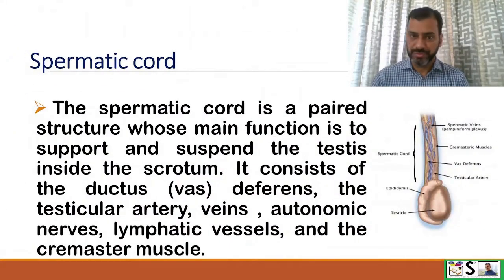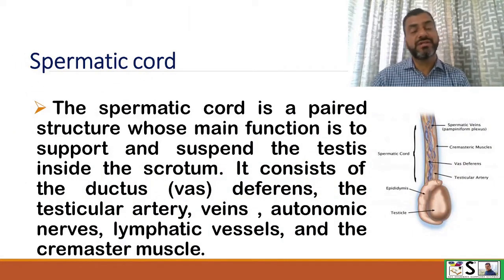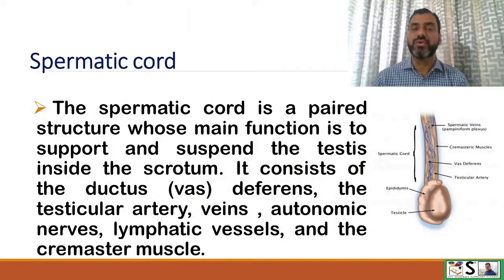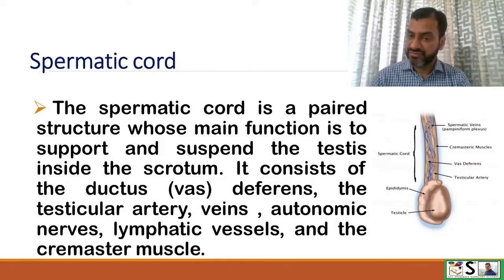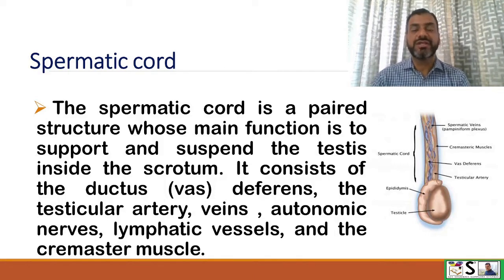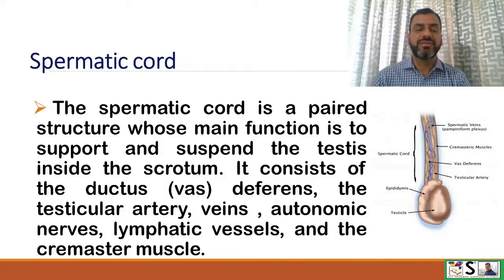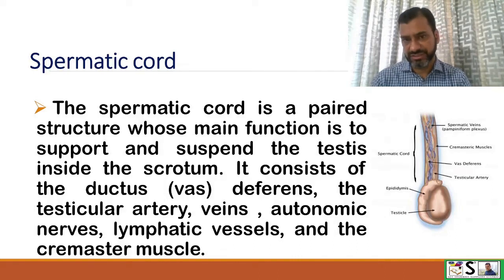The spermatic cord is a paired structure whose main function is to support and suspend the testes in the scrotum. It consists of the ductus deferens, testicular arteries, veins, autonomic nerves, lymphatic vessels, and the cremaster muscle.